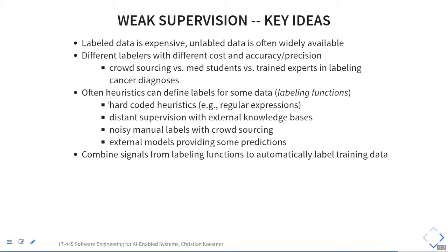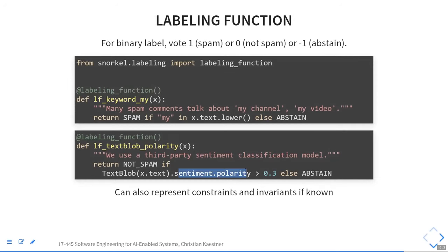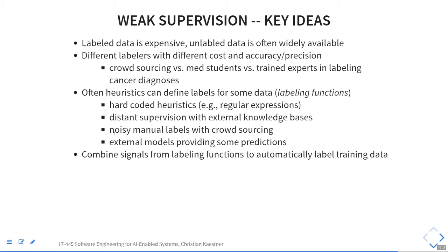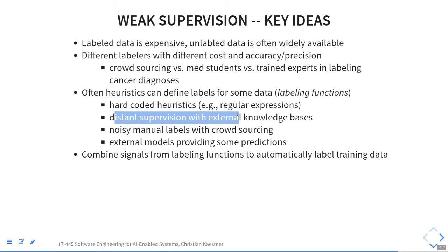This is fairly flexible and you can use quite a few different kinds of labeling functions with different qualities. Hard-coded heuristics where you look for certain phrases you hard code and assume certain things. You can use distance supervision, which essentially delegates to a different model that is somewhat weak but works well on some examples — that was the second example of using sentiment analysis or polarity of the text as a signal. You can also use crowdsourcing integrated here, external models, and external knowledge bases that provide relationships, like zip codes in the previous example.